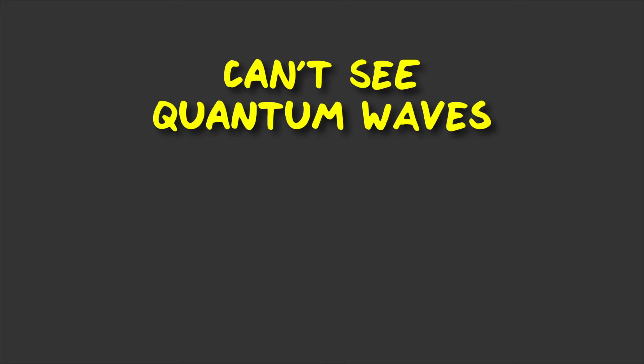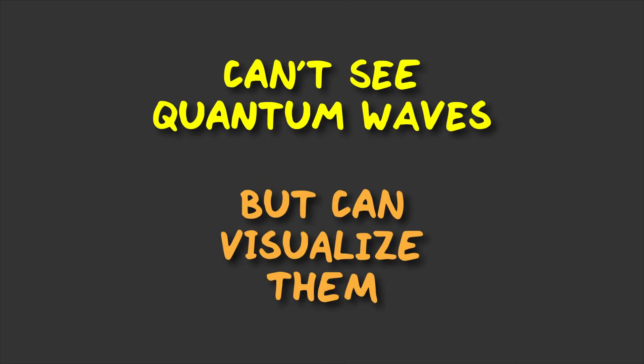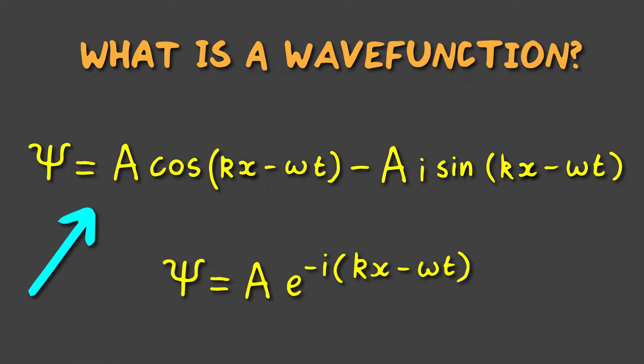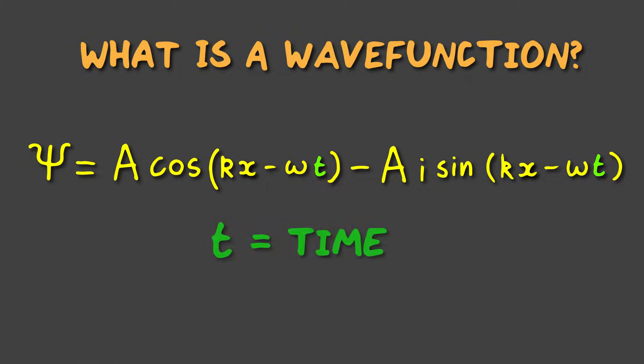But even though we'll never be able to see a quantum wave function, we can do the next best thing and visualise the mathematical equations. So this is what the math says the wave function looks like. These two are mathematically equivalent, although this one's easier to do calculations with. But we'll use this form for this video as it's easier to visualise. This wave function depends on time and one dimension of space, which is a simplification from a real particle which exists in three dimensions of space. But this simplification allows us to plot this function, so let's do that.